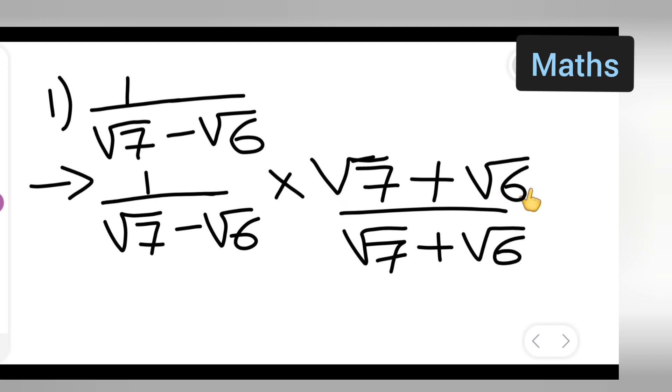So 1 multiplied by this gives you the same thing. It will give you root 7 minus root 6 upon—so what you will get is root... Let me write this on the next page.